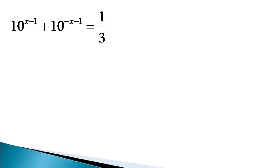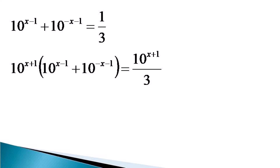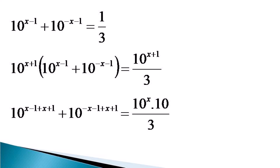To solve this equation, we first multiply both sides by 10 raised to the power x plus 1. So the left hand side becomes 10 raised to the power x minus 1 plus x plus 1, plus 10 raised to the power minus x minus 1 plus x plus 1, and the right hand side can be expressed as 10 raised to the power x into 10 by 3.